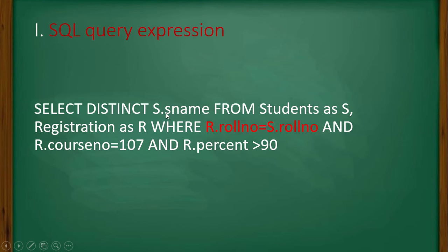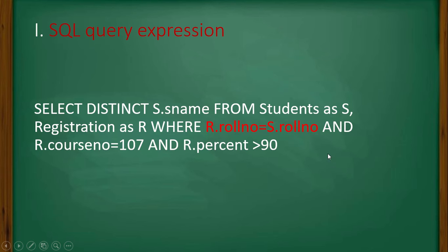Looking at the SQL query: SELECT DISTINCT — distinct means it will select the unique name — s.name FROM student AS s, registration AS r WHERE r.roll_number = s.roll_number. This is a join operation. And r.course_number = 107 AND r.percent > 90. Due to the join operation, it finds all student names who have course number 107 and have scored greater than 90% in this course.